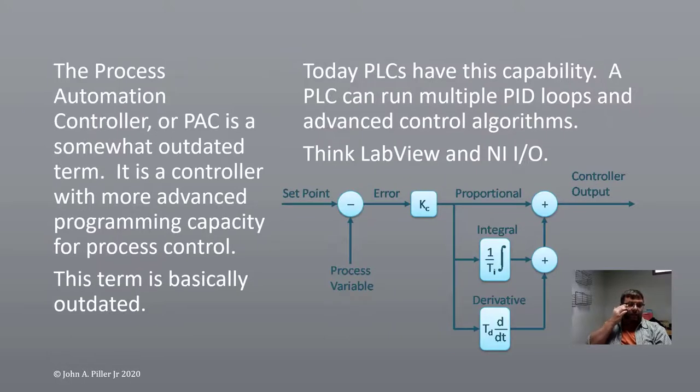The PAC, the process automation controller is kind of an outdated term. It talked about, all right, so the PLC does this ladder logic, this very basic relay spice. I want to do a little bit more than that. I want to do some higher level capacity. Well, PLCs can do higher level capacity programming. Now there are PIDs on PLCs. I use them all the time for PIDs. I've got a processor out there that I can have up to 2000 PIDs simultaneously running. That's amazing that it does this.